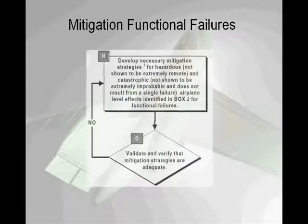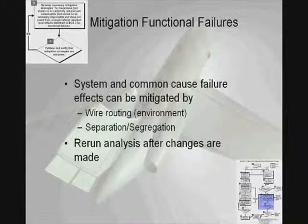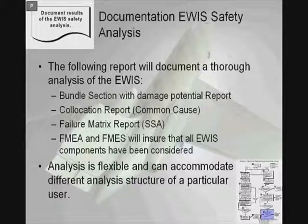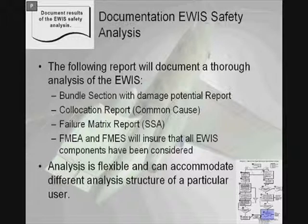One of the mechanisms for reducing the failure rate would be the use of mitigation techniques, including wire routing, separation, and segregation. The eWistrat allows these changes to be made dynamically and analyses to be rerun once changes are made. One important aspect of the eWistrat is the documentation of the safety analysis. The eWistrat reports document a thorough analysis of the eWist with the bundle section report, damage potential report, co-location analyses for common cause analysis, failure matrix report for SSAs, and FMEA and FMES, ensuring that all eWist components have been considered. This analysis is flexible and can accommodate different analysis structures.